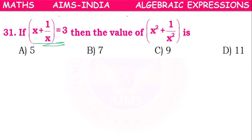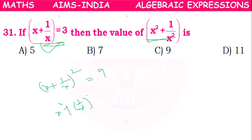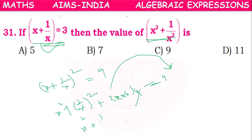Next: if x + 1/x = 3, then x² + 1/x² how much? Squaring both sides: (x + 1/x)² = 9. Expanding: x² + 1/x² + 2(x)(1/x) = 9. The x's cancel giving +2, so x² + 1/x² + 2 = 9, meaning x² + 1/x² = 9 - 2 = 7. 7 is the answer.